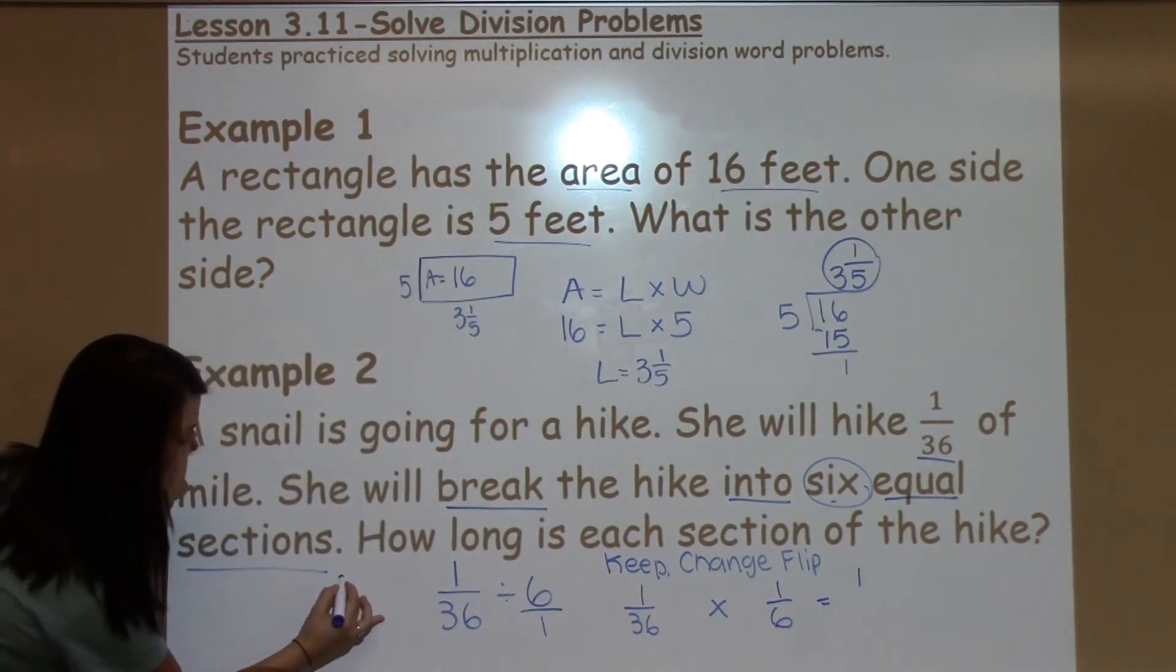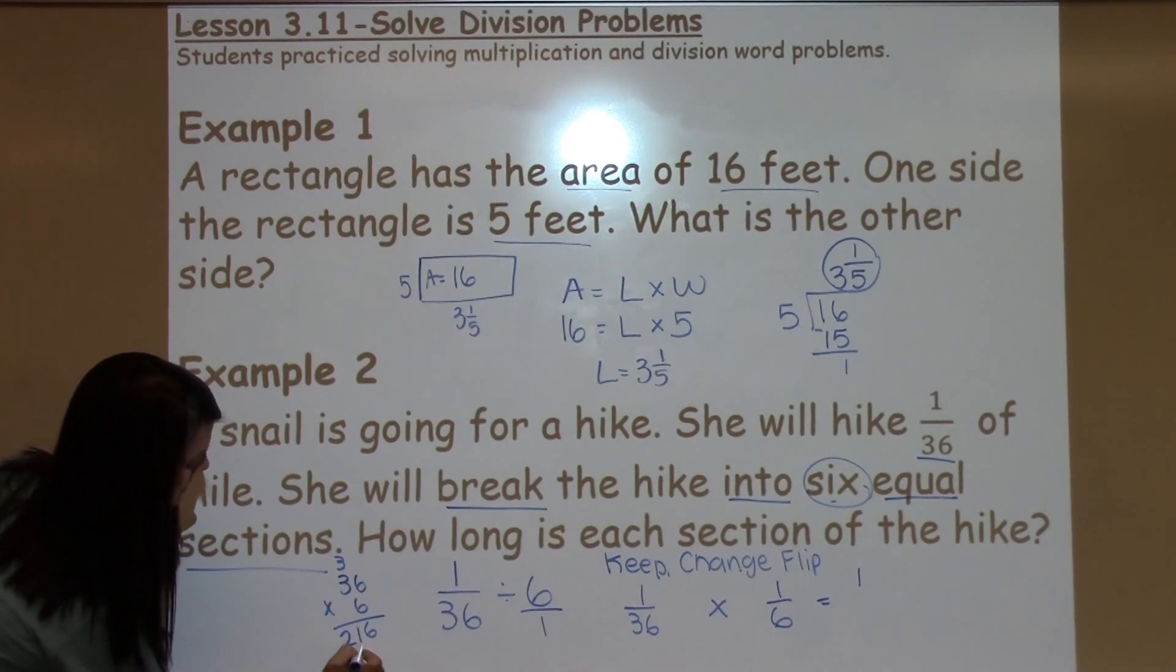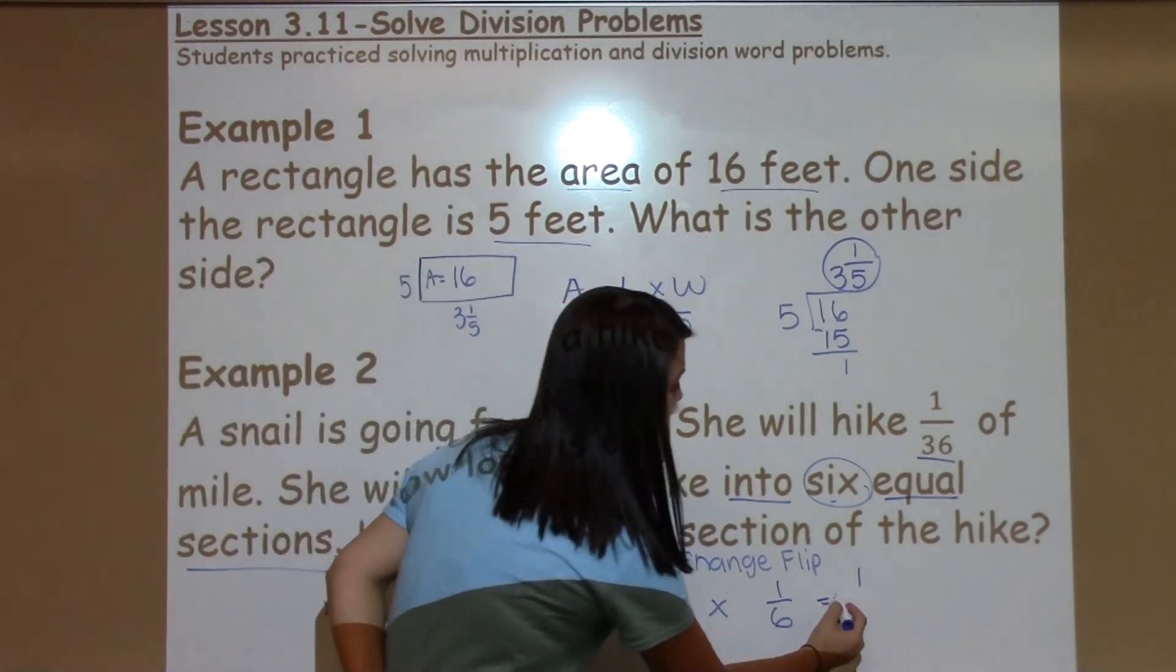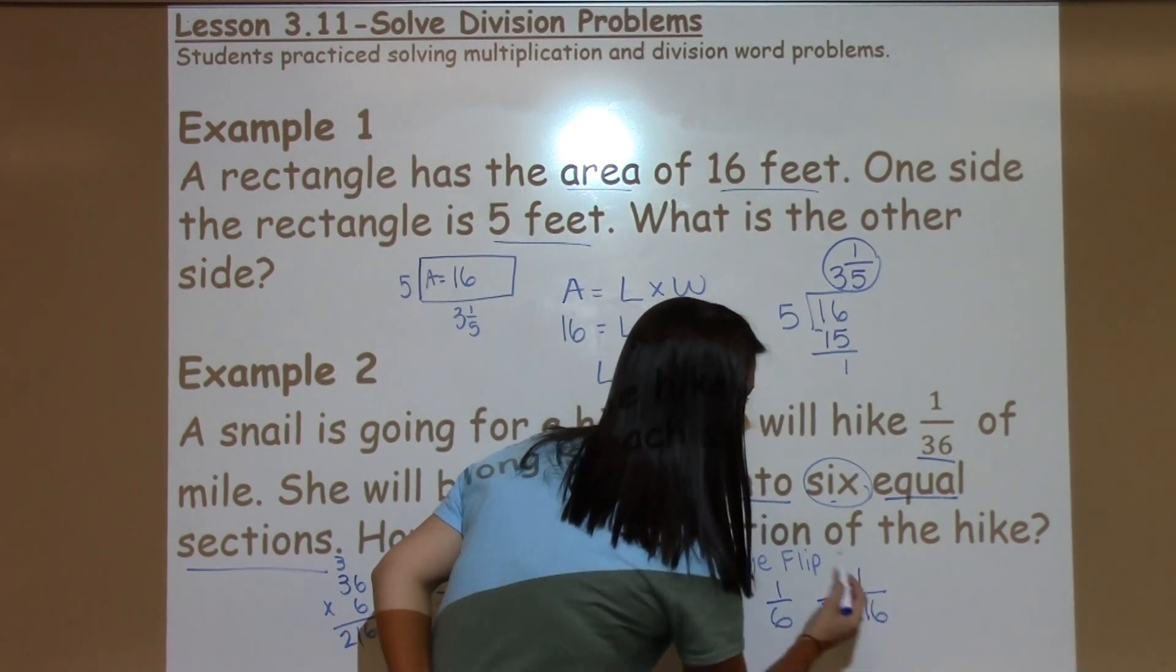So I'm going to pull that right over here. 6 times 6 is 36 again. 6 times 3 is 18, plus 3 is 21. And my answer becomes 1 over 216.